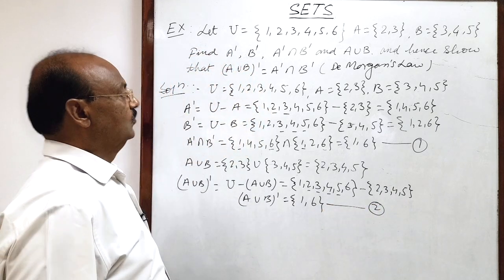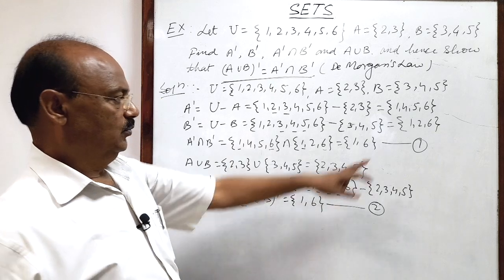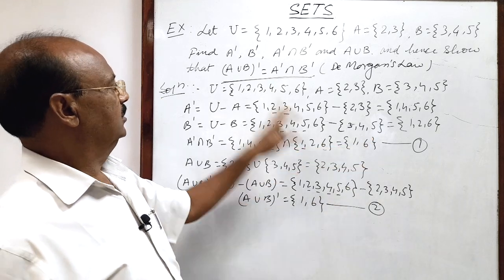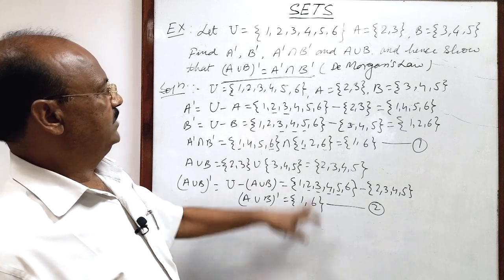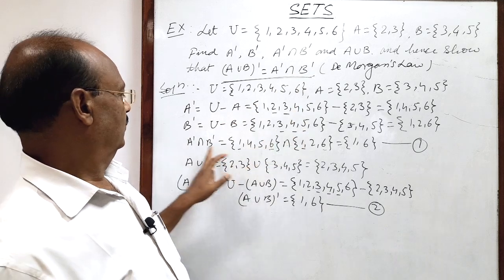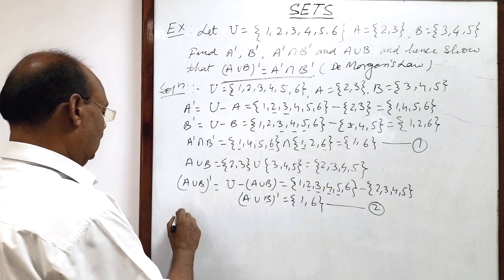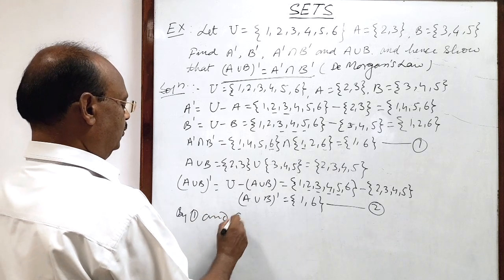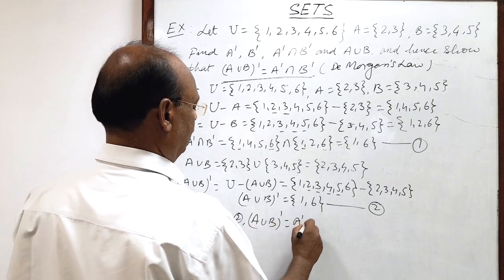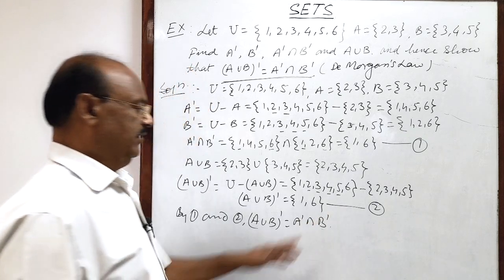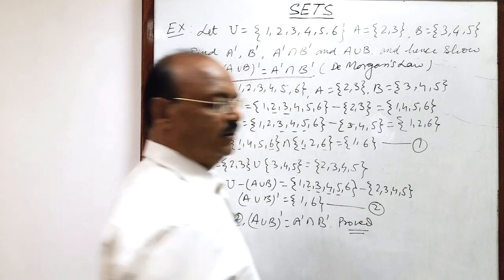We now verify the result. From relation number 1 and relation number 2, both are equal. A union B whole complement is the set {1, 6}, and A complement intersection B complement is also the set {1, 6}. By these two relations, we have proved that A union B whole complement equals A complement intersection B complement. The result has been verified.